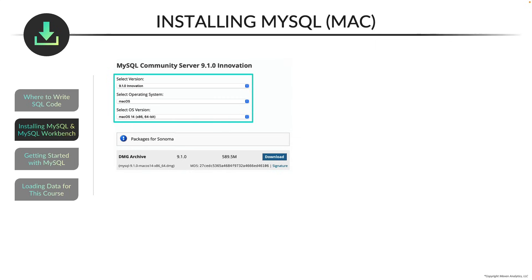For the version, the latest version is currently 9.1.0, but these versions are constantly changing, so just pick the latest version. For operating system, choose Mac OS. For the OS version, if you have an older Mac with an Intel processor, choose x86. If you have a newer Mac with an M1, 2, or 3 chip, choose ARM. If you're unsure, I'll be walking through this in more detail in the demo.